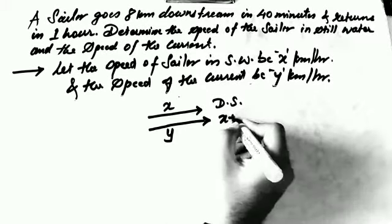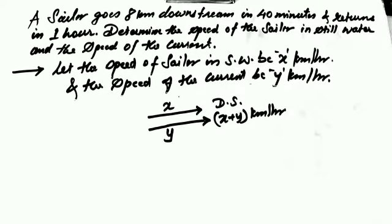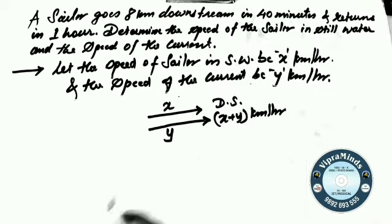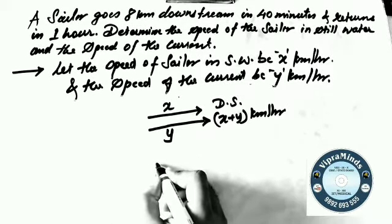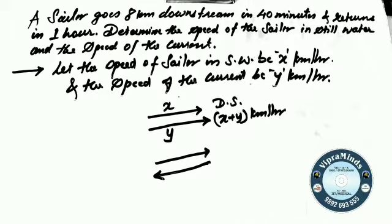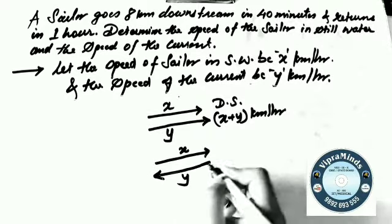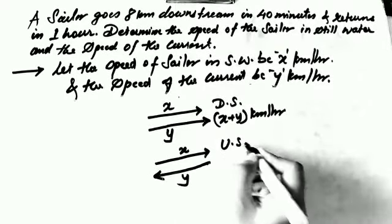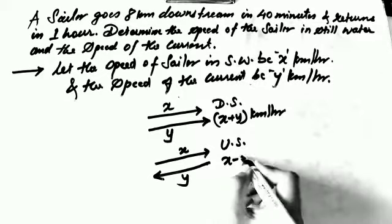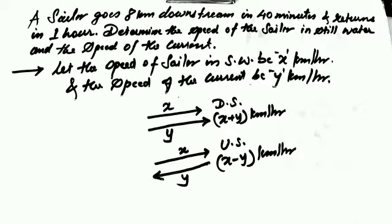The downstream speed is x plus y km per hour — both speeds add together. Now suppose the boat is moving in one direction and the water current is in the opposite direction. We call this upstream. The speed of the boat is still x and the water current speed is y, but they are in opposite directions. So the upstream speed is x minus y km per hour, which will be smaller.